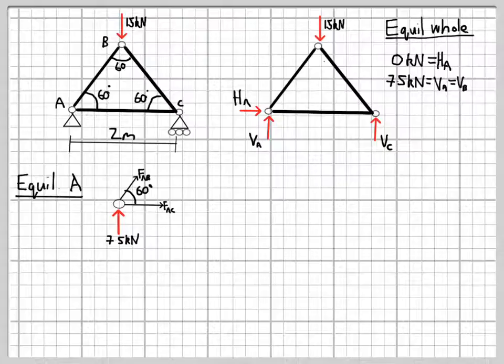It's best to start with a joint where you just have two unknown forces. Here we're going to start with joint A, and it's best to draw a free body diagram of each joint as you analyze it. In the diagram just on the left there, we've isolated joint A and imagined taking a cut through members AB and AC. As a consequence, we've got these forces FAB and FAC that we need to determine.